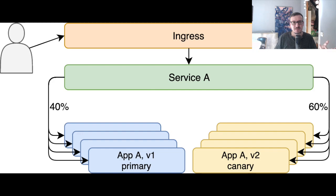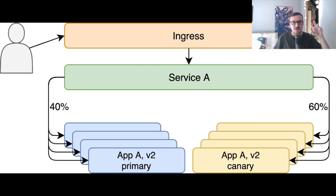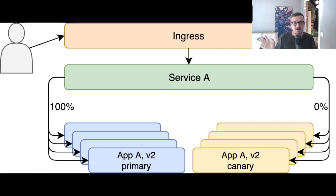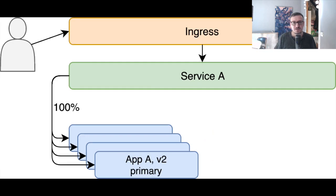Now let us upgrade the primary release to the new version. At that moment, no matter the percentage going to primary or Canary release, both of them would have the same version of the software. Once both are running the same version, we redirect 100% of the traffic back to the primary release, which is now running the new version. Once there are no more pending requests going to the Canary release, we can completely remove all the replicas of the Canary release, since 100% of the requests are going to the primary.